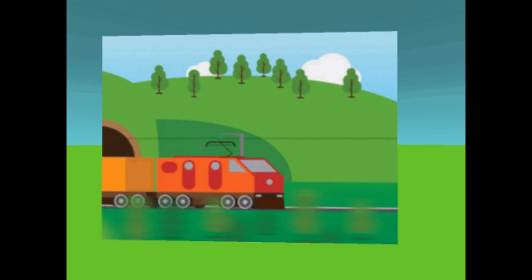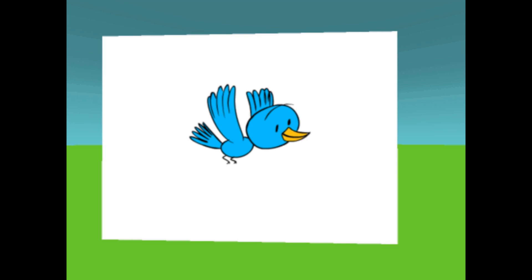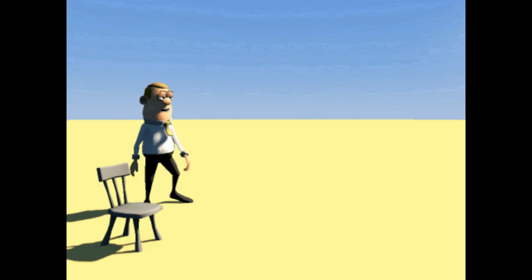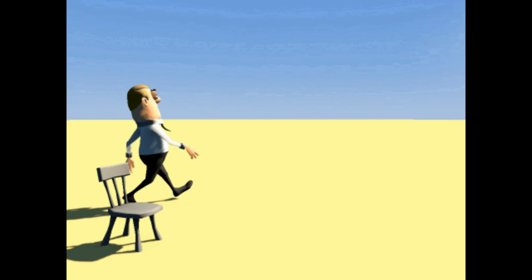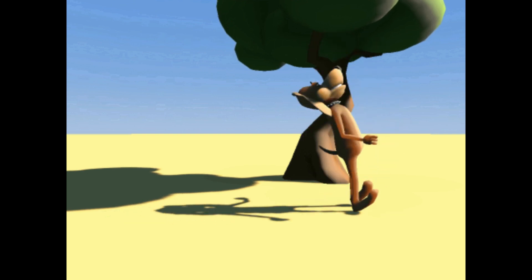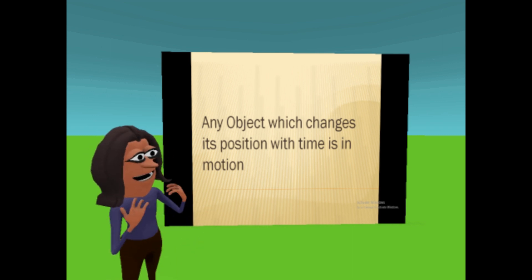On the other hand, we have moving buses, trains, flying aeroplanes, birds, moving ships, and fishes — all of which are in motion. A man is stationary when he is standing, while the same man is in motion when he is walking or running. Similarly, an animal is stationary when sitting under a tree, and the same animal is in motion while hunting.